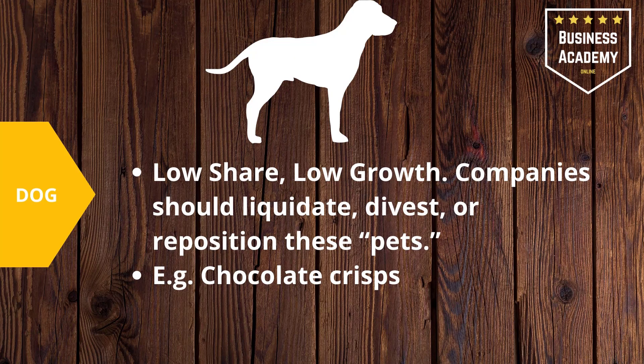The next area is dog. Dogs have low market share and low market growth. Essentially, it's just not working. So companies should liquidate, divest or reposition these. They could have been pet projects by the owner that didn't really work out, or perhaps the public didn't get on board with it. A couple of years ago there were some chocolate crisps — pretty much like Pringles but chocolate. They were amazing, and now they've disappeared. No one bought them.